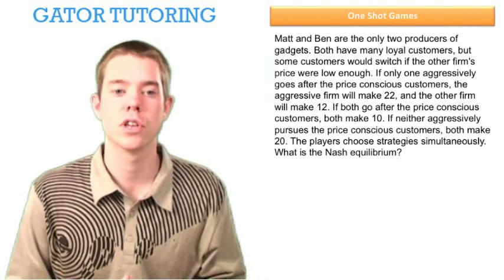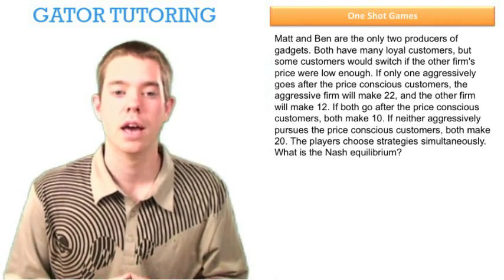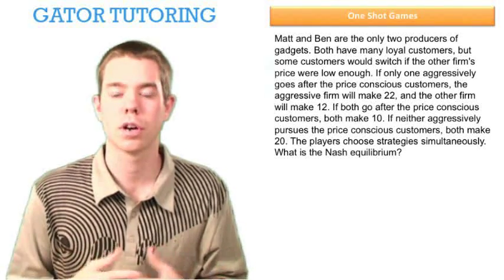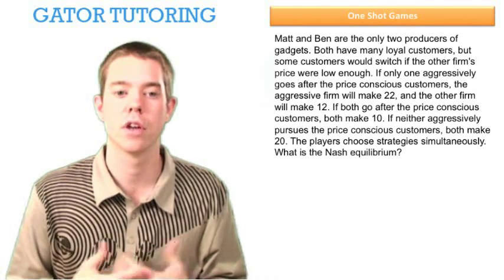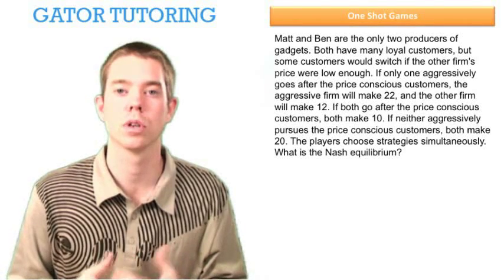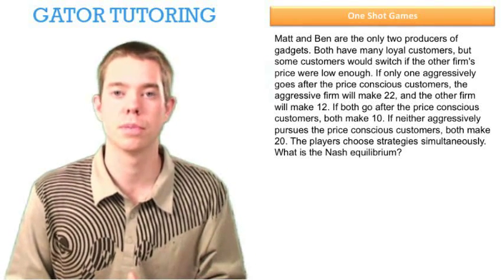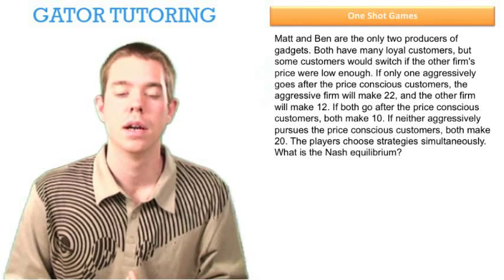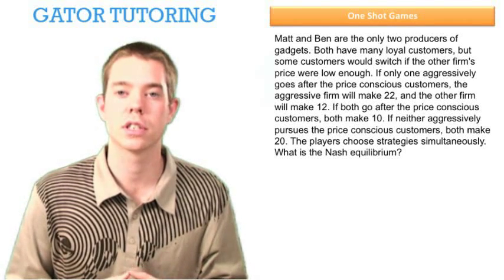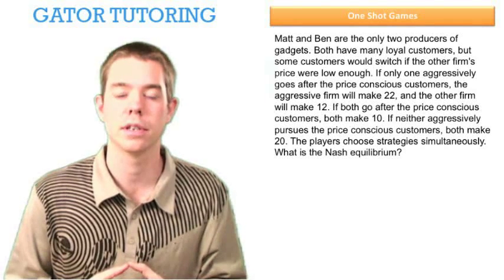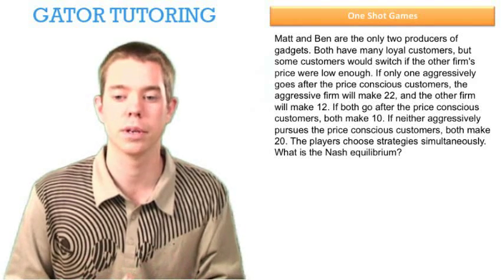It tells us that Matt and Ben are the only two producers of gadgets, and they both have many loyal customers, but some customers would switch if the other firm's price were low enough. It then goes on to give us some information about the game, and it says that the players choose strategies simultaneously, and we want to find what is the Nash equilibrium.